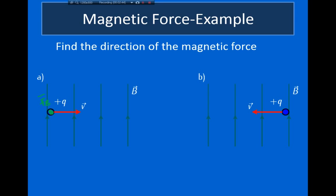In the second example, the particle is moving towards the left and the magnetic field is pointing up. Orient the right hand so fingers point left, with the palm pointing towards the top of the screen so fingers can curl in the direction of the magnetic field. When oriented this way, the thumb points into the screen — so the magnetic force exerted on this charged particle points into the screen.